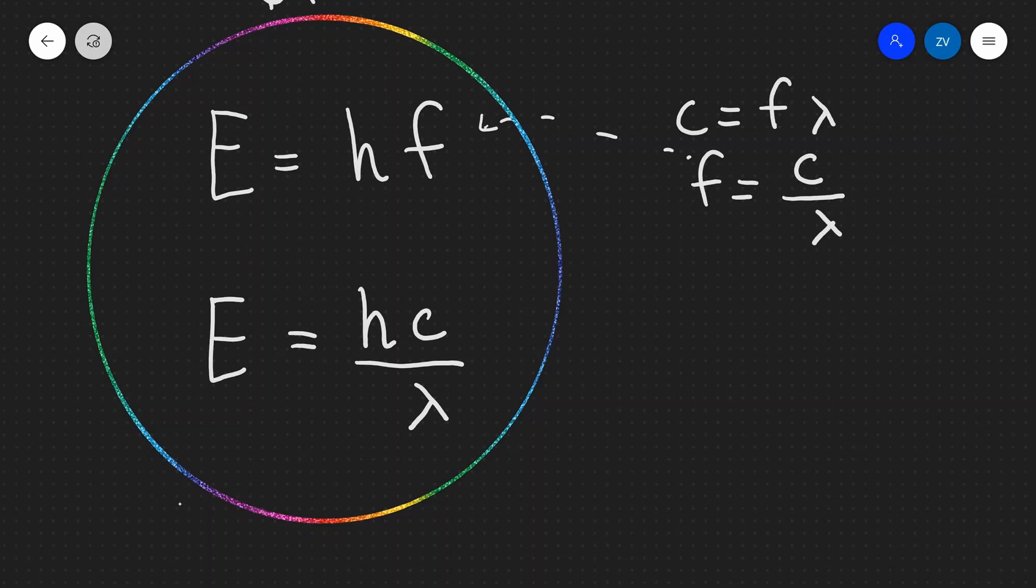Now, in both of those equations, the constant of proportionality h, known as Planck's constant is tiny. So it's a very small number equal to 6.63 multiplied by 10 to the power of minus 34. And this number is given in your formula booklet.